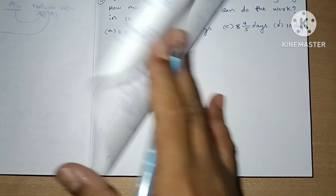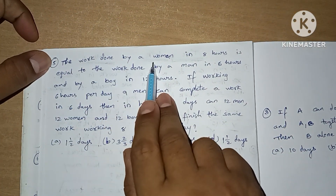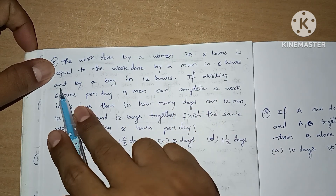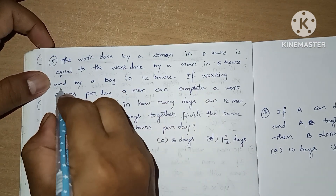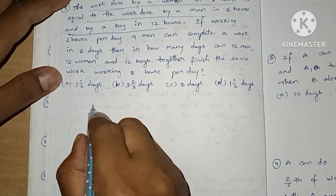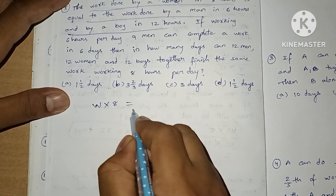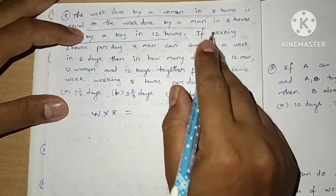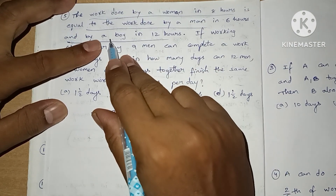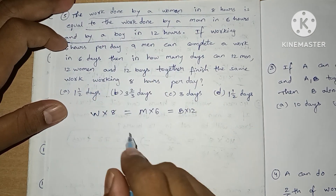Now we are going to see the most difficult question in this concept. The work done by a woman in 8 hours is equal to work done by a man in 6 hours and by a boy in 12 hours. So a woman working 8 hours equals a man in 6 hours equals a boy in 12 hours. These three lines mean this one.